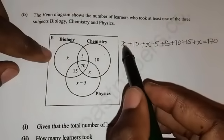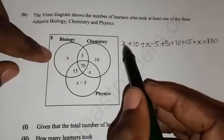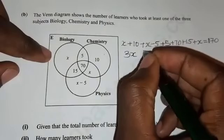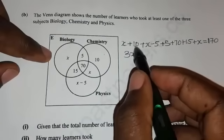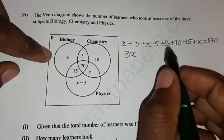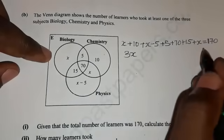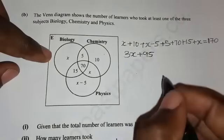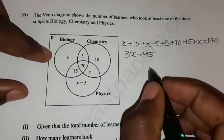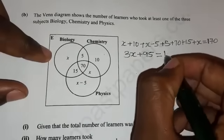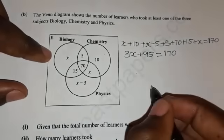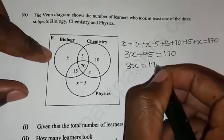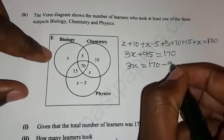That's the information we've been given. So here we collect like terms together. We have x plus x plus x, which is 3x. Then when you add 10 minus 5 plus 5 plus 70 plus 15, we get positive 95.